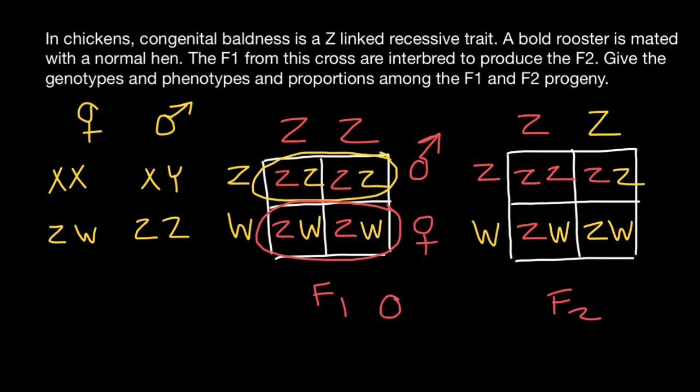Now let's find the ratio in the F2 generation. Male side, female side, or we can say rooster side and hen side. As you see, 50% of the roosters are going to have baldness, so 50% would be bald, but also 50% of the roosters are going to be phenotypically normal.